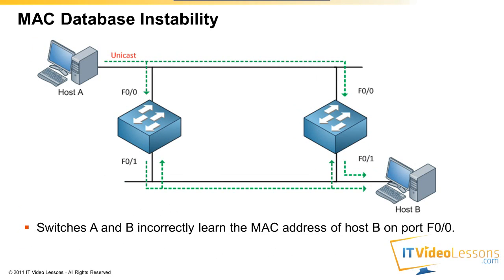What else could happen? MAC database instability. Because we have frames going around, it's possible that the switches will be confused. Take a look at Switch A — the first time it will think that the MAC address of Host B is on port FastEthernet 0, and then it will believe that it's on port 1, and then it will believe that it's on port 0 again, because this Ethernet frame is being sent on multiple segments.